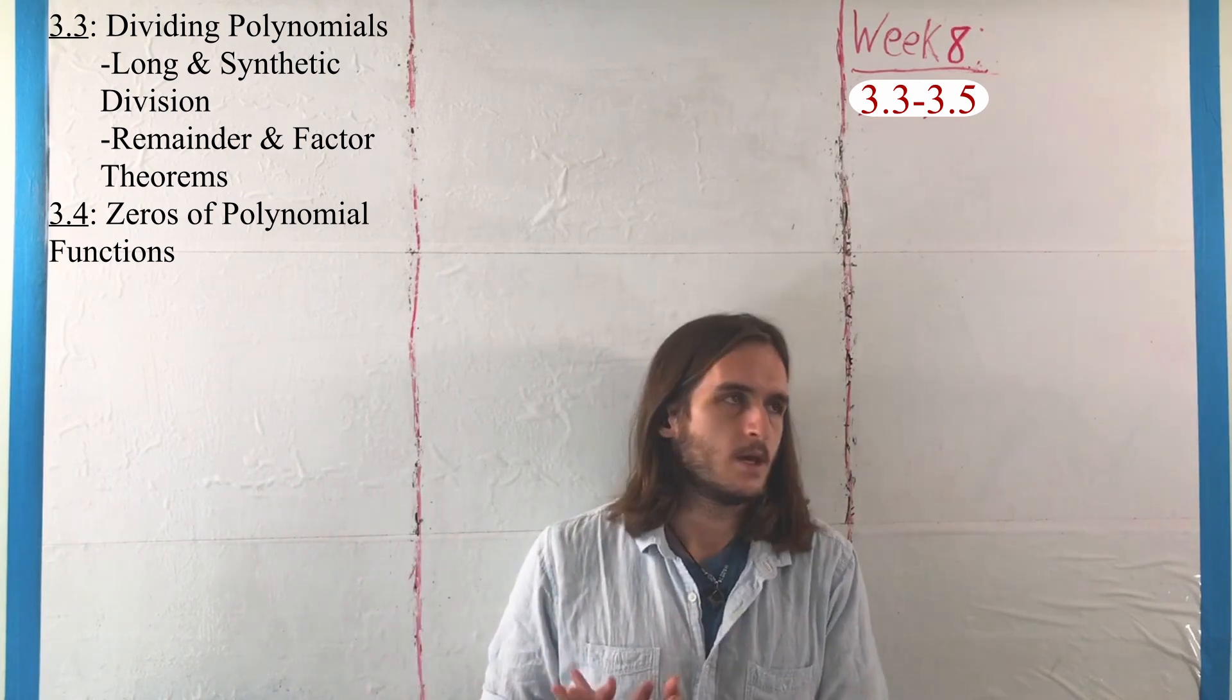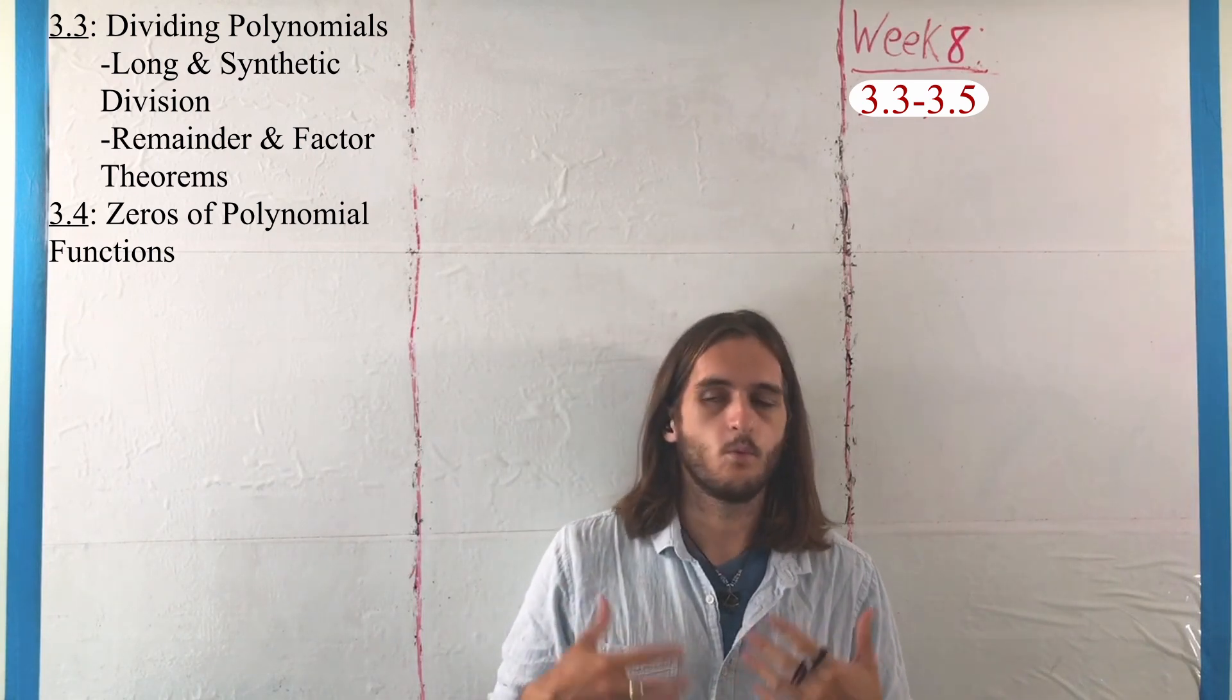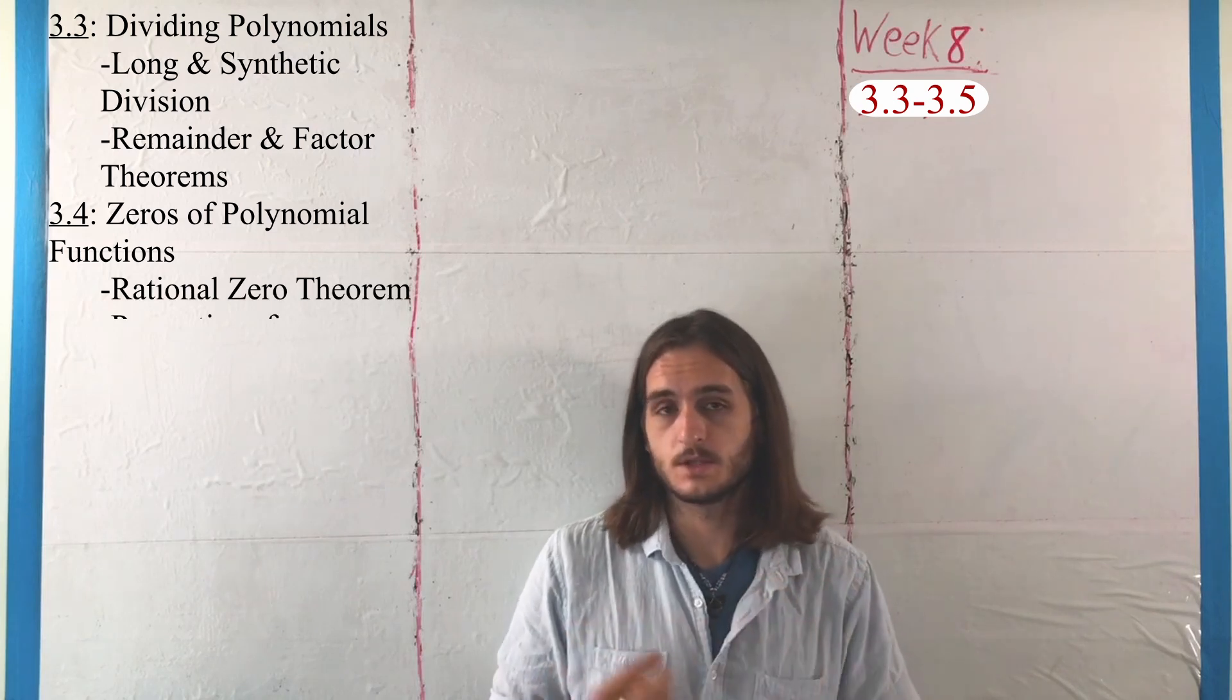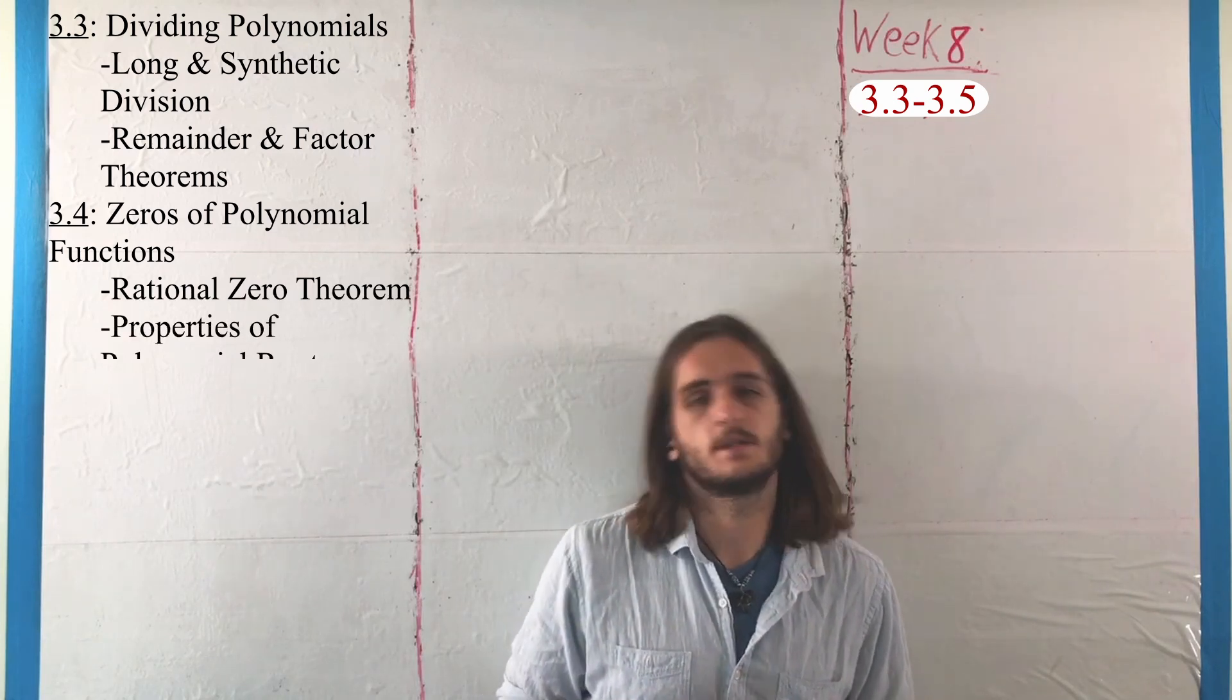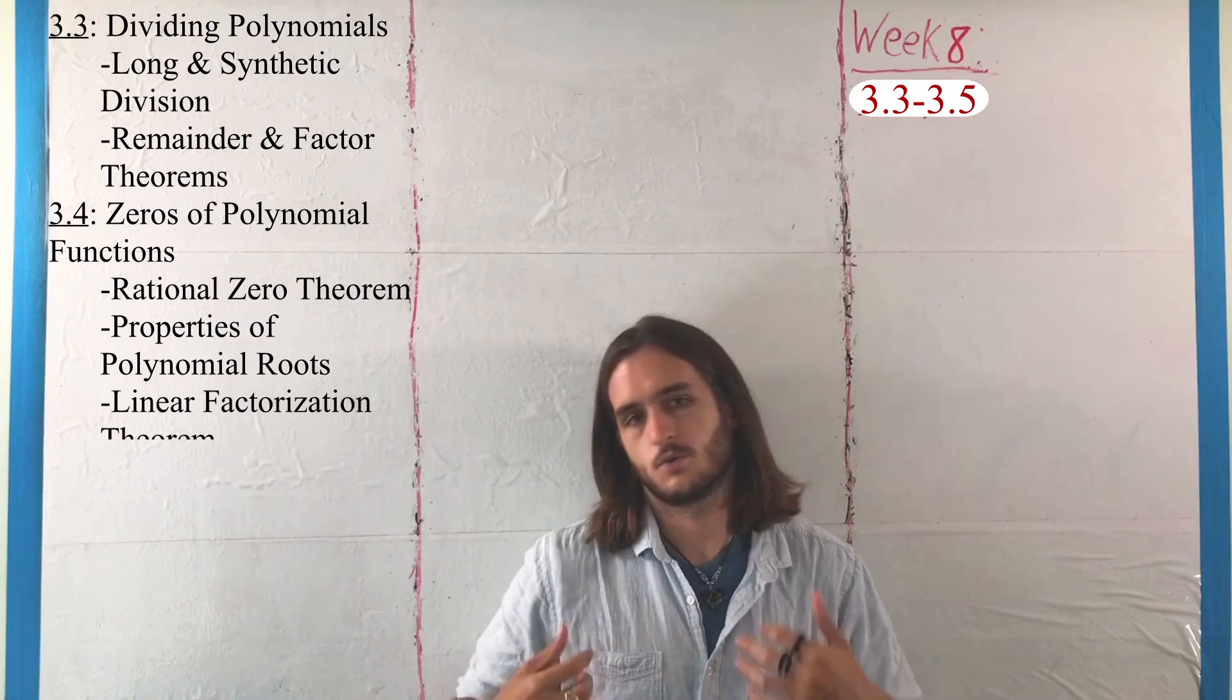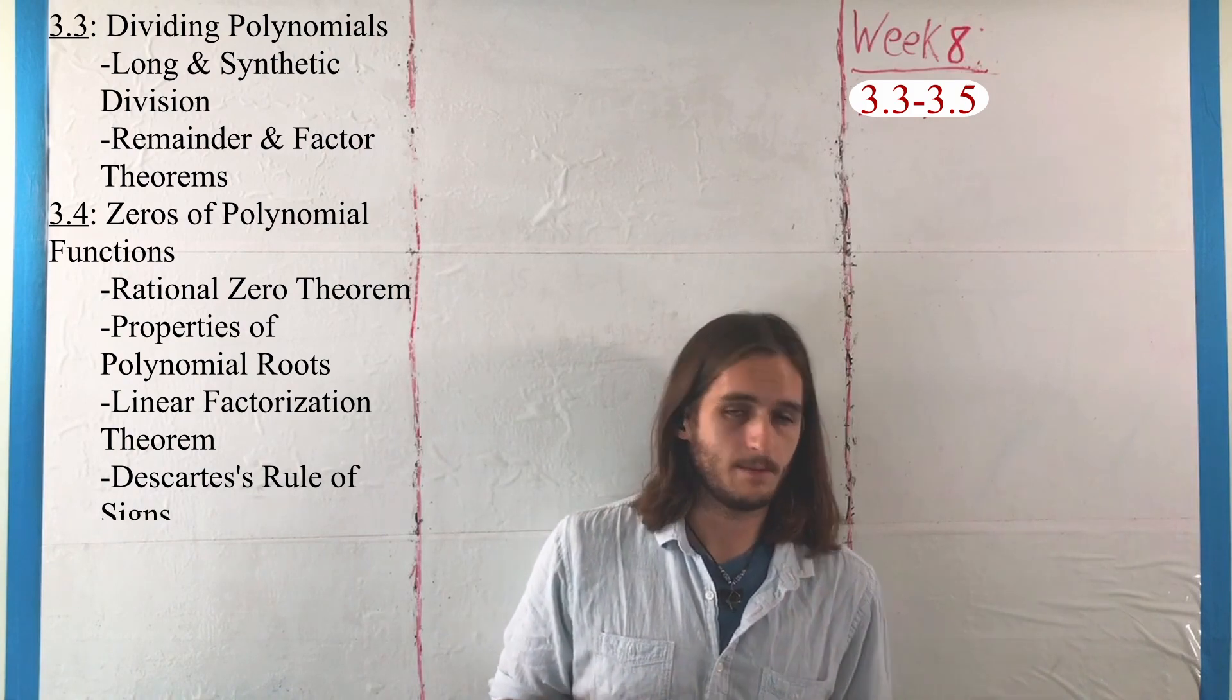So we're going to see some ways that we can, if not get the exact values, at least talk about what they could be with things like the rational root or rational zero theorem, the linear factorization theorems and properties of zeros, and then Descartes' rule of signs for being able to guess how many of them we should be able to expect.